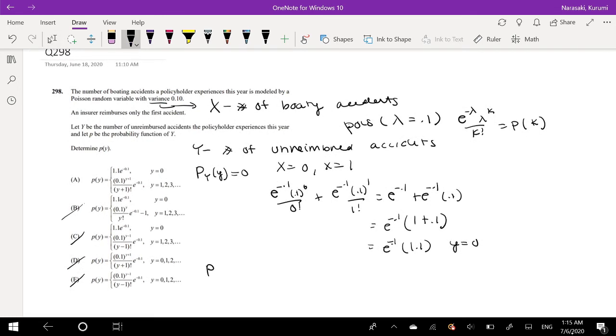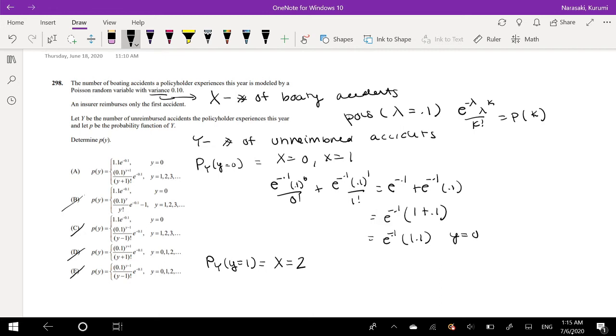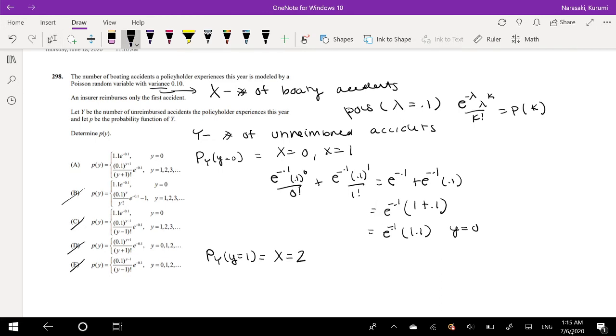So what would it be when probability of y is equal to 1? Well, it's kind of the same thing. That happens when x, the number of boating accidents, is equal to 2. Then this is equal to e to the negative 0.1, 0.1 to the 2, over 2 factorial. This is kind of the same thing as just saying probability of x equals 2.